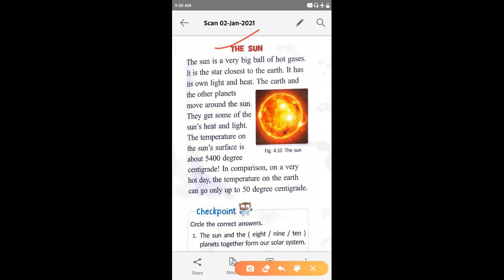Uska apna light aur heat hota hai. The earth and the other planets move around the Sun. Sun ke charo or earth aur other planets ghoomte, move karte hain. They get some of the sun's heat and light.